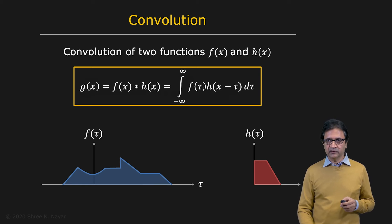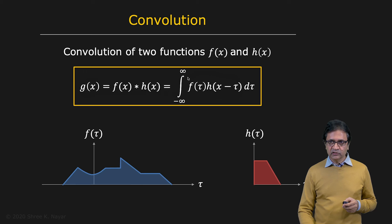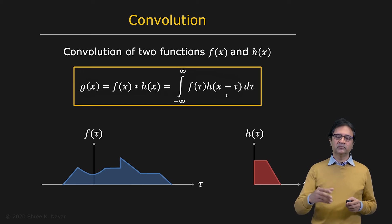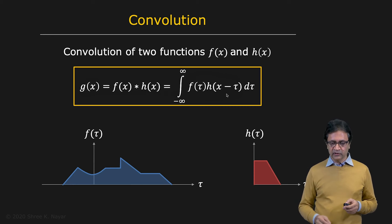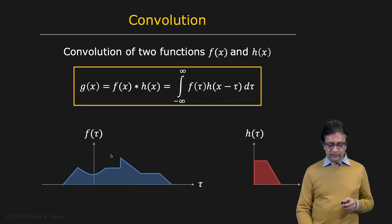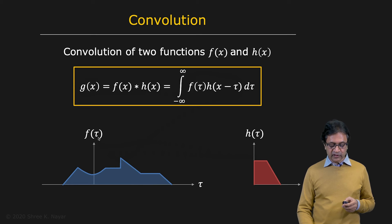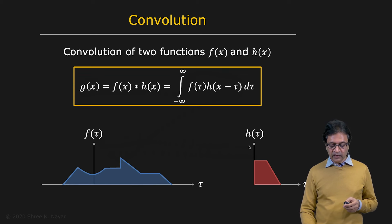So that's the definition. I want you to pay attention to this and I'll try to explain in a visual way what's actually going on. Let's say this is f of x and h of x. We are going to express them using the variable tau, so f of tau and h of tau.